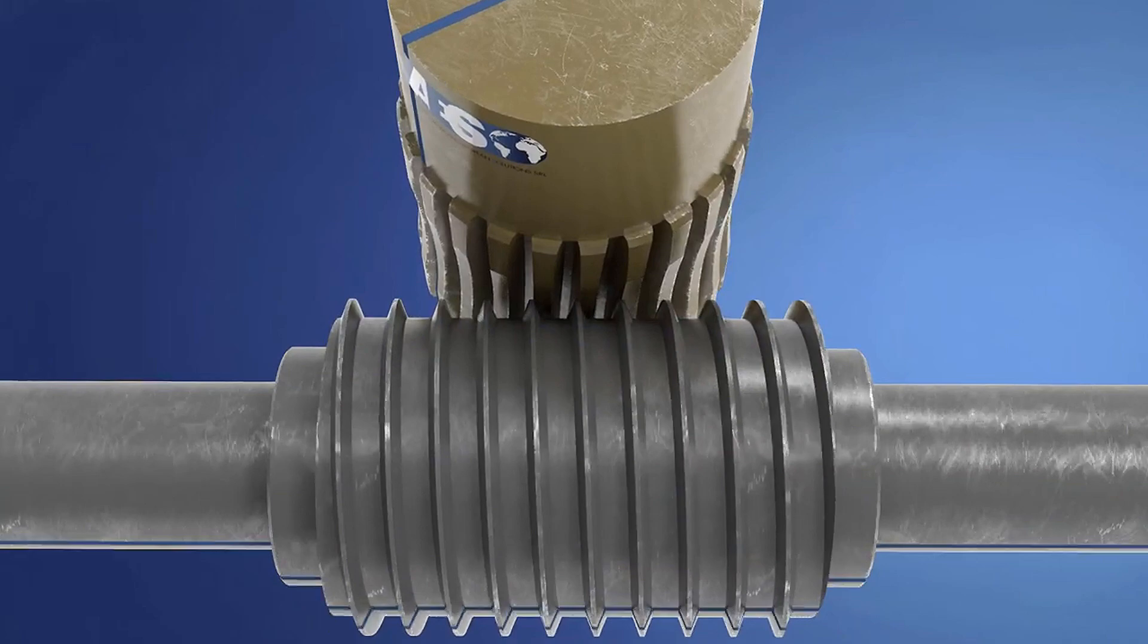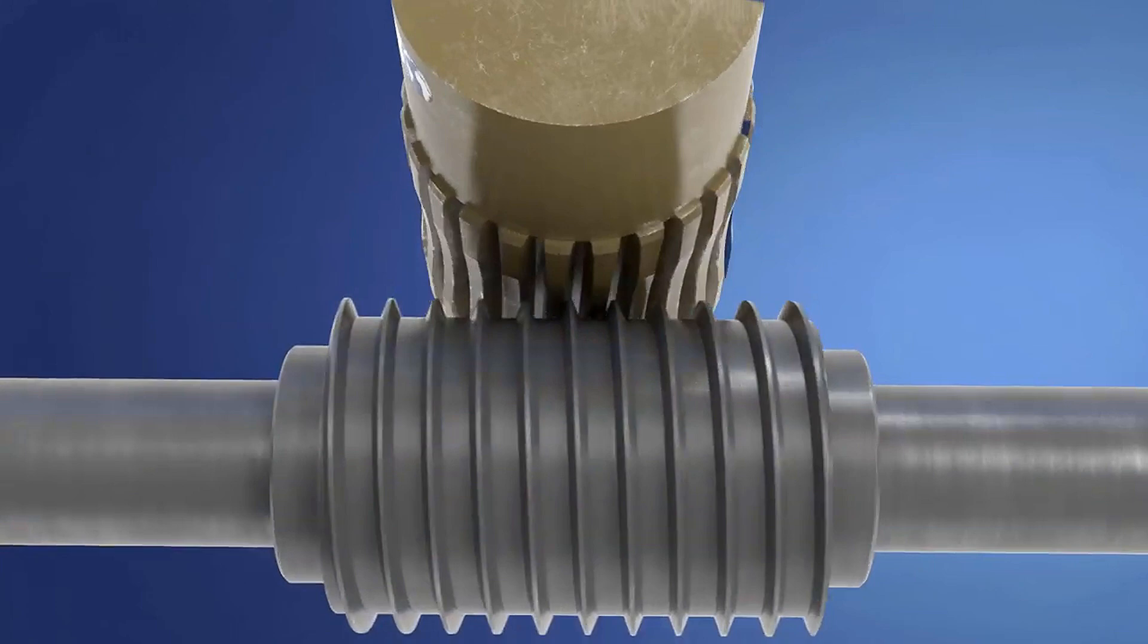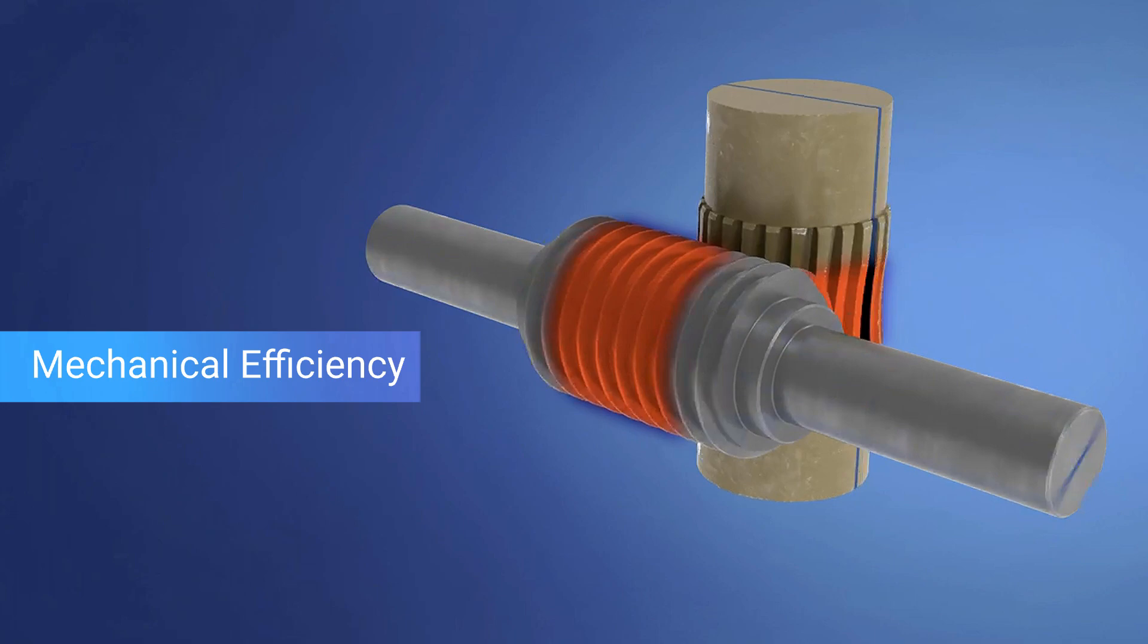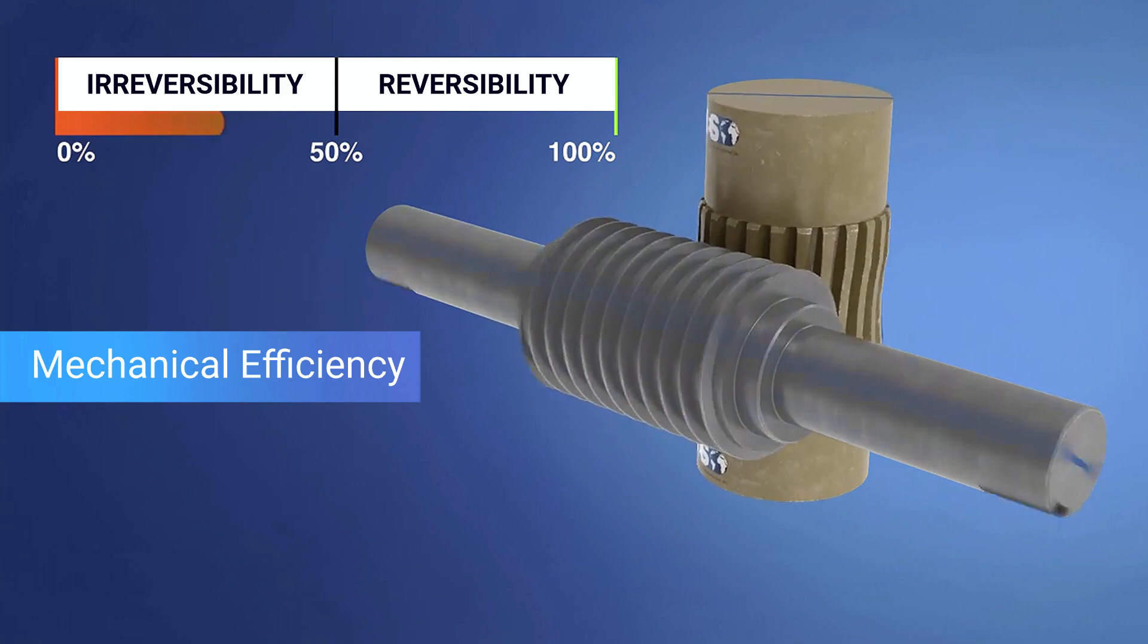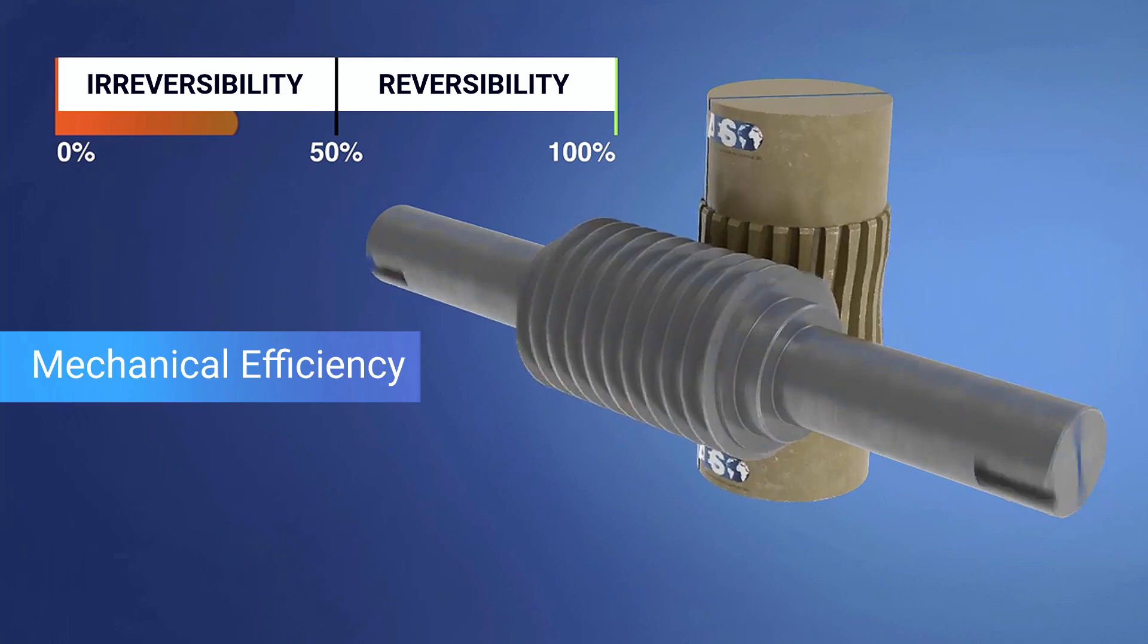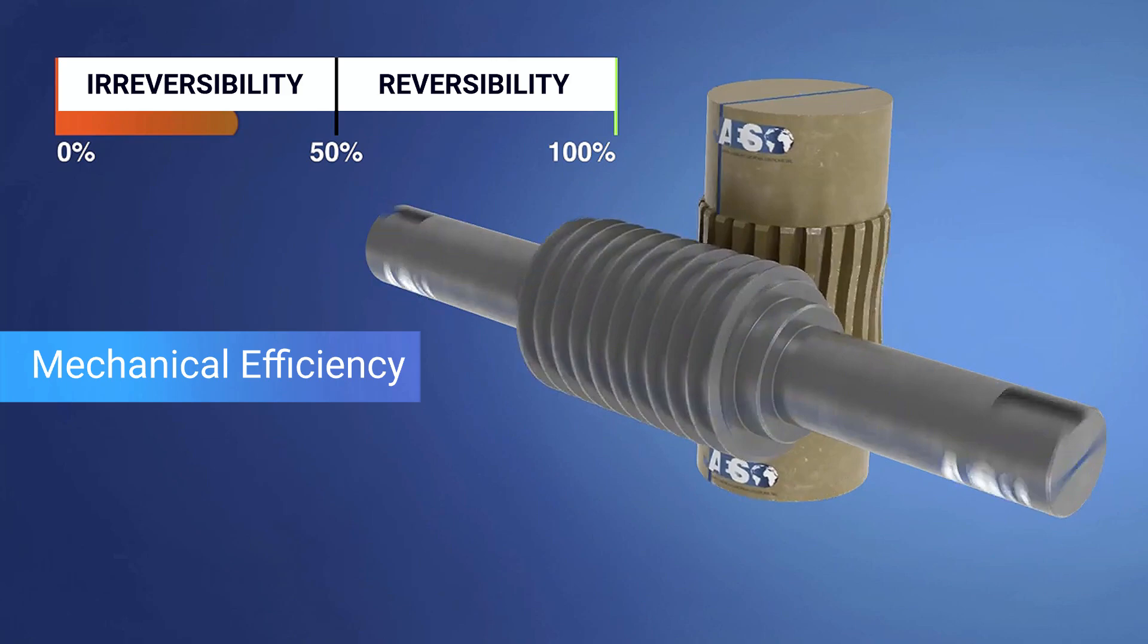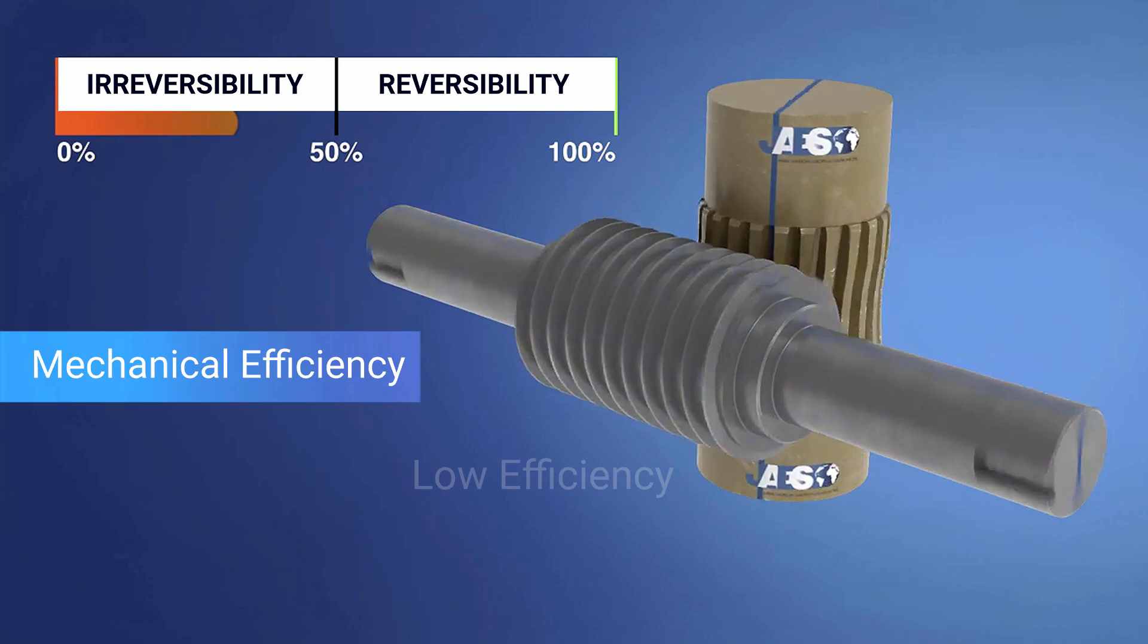The mechanical efficiency represents the measure of the effectiveness with which the mechanical components perform without losing energy. When the efficiency is less than 50% and when the helix angle is equal to or less than the angle of friction, the mechanism will be irreversible and it can only be driven by the worm screw. The worm gear mechanism usually has low efficiency because there are many contact areas, and the sliding motion creates friction between the gears.